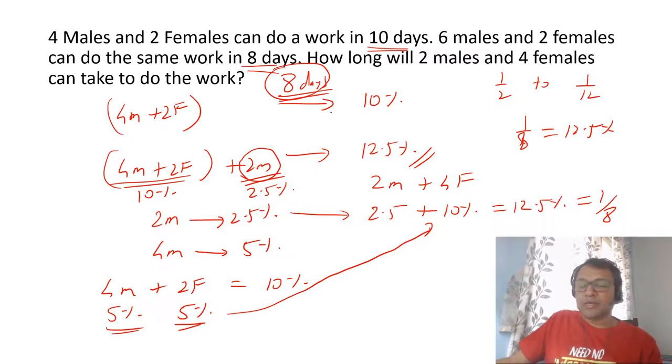This is the percentage method. You can do any other method also, but the key is to combine four males and two females together and keep these two males separately, and then solve. With that, you can easily get the answer.